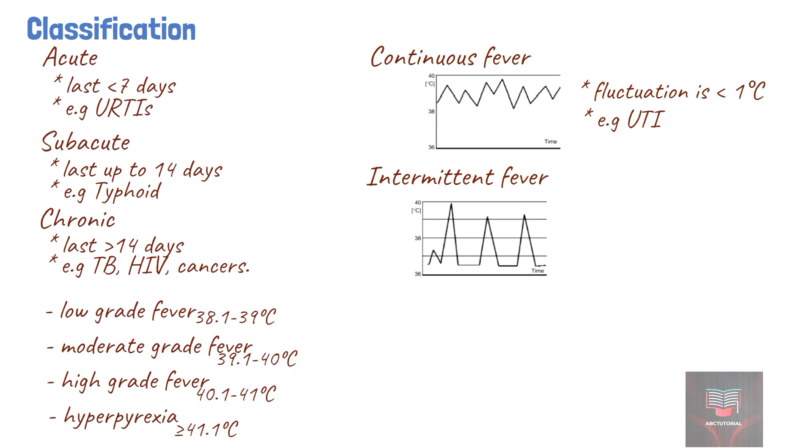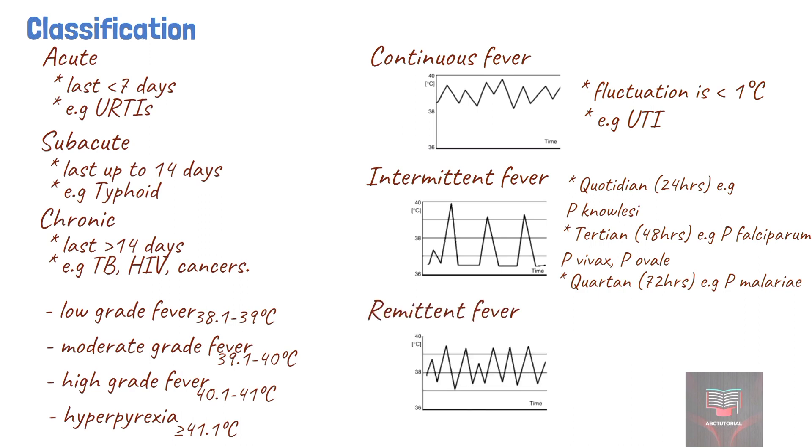Among the types of intermittent fever, quotidian fever has a 24-hour periodicity and is typical of malaria caused by Plasmodium falciparum, Plasmodium vivax, or Plasmodium ovale. Quartan fever has a 72-hour periodicity and is typical of malaria caused by Plasmodium malariae. In remittent fever, the temperature remains above normal throughout the day and fluctuates more than one degree Celsius in 24 hours. An example is fever seen in sepsis and infective endocarditis.